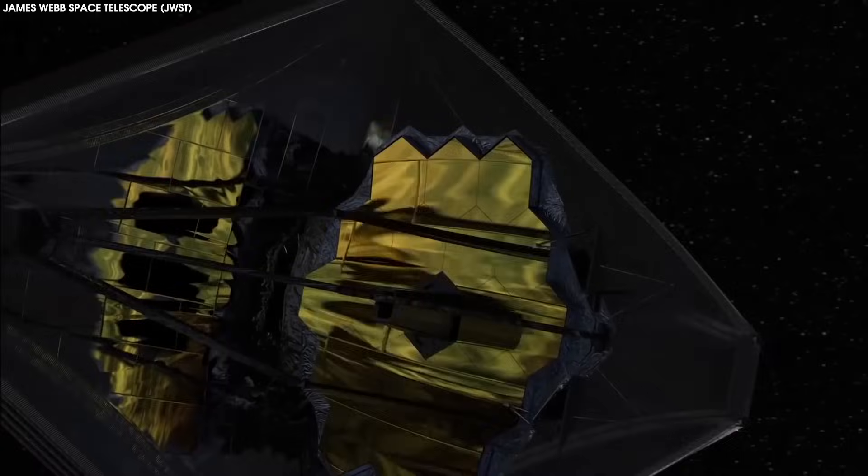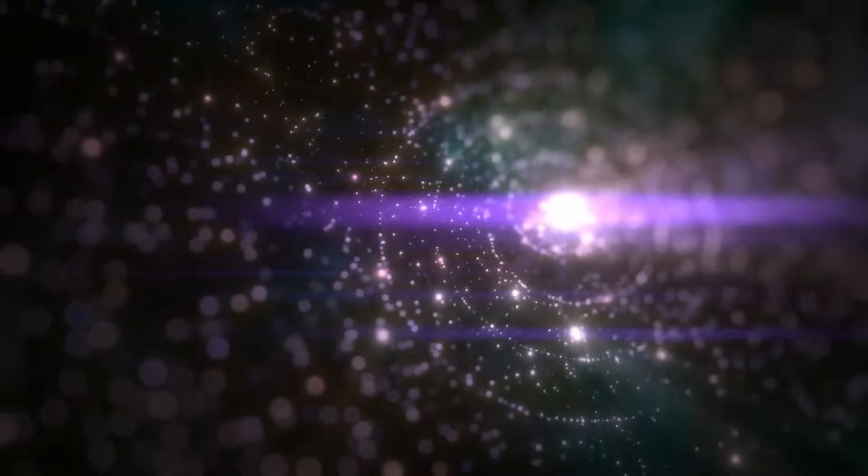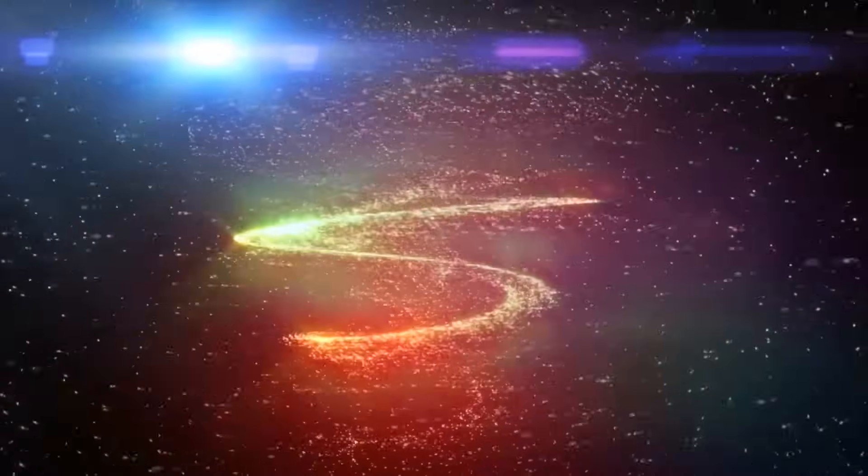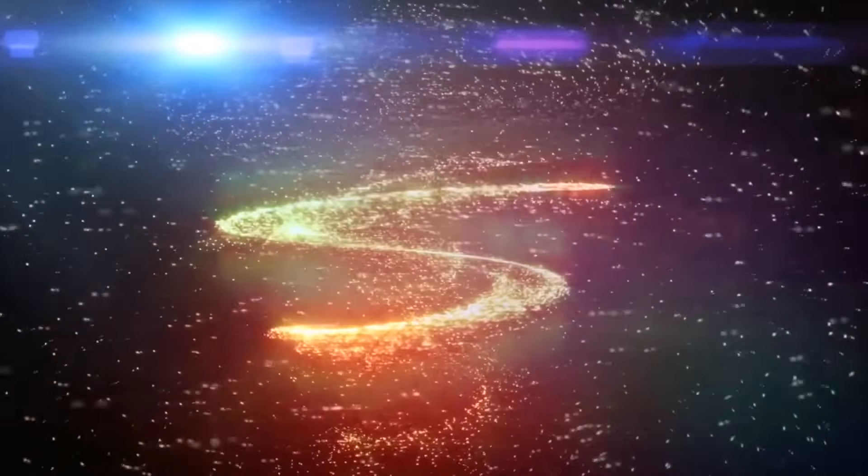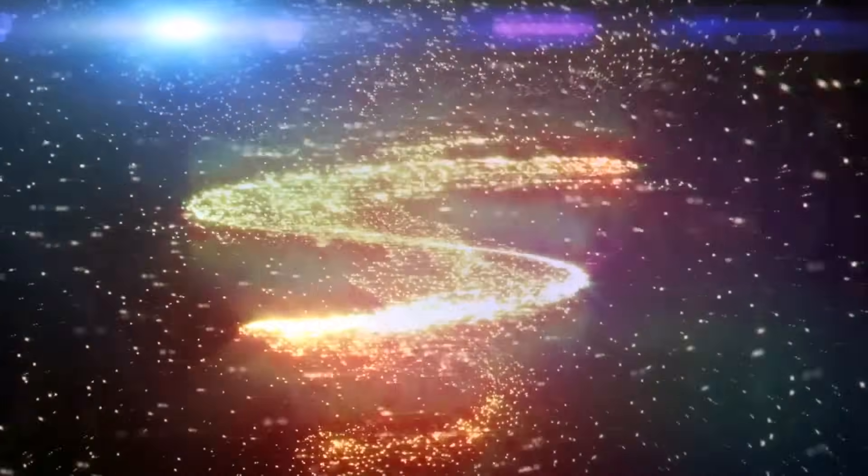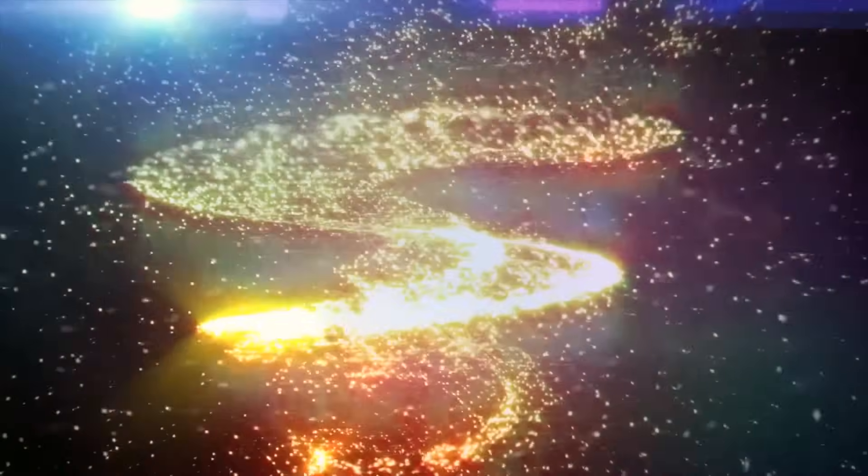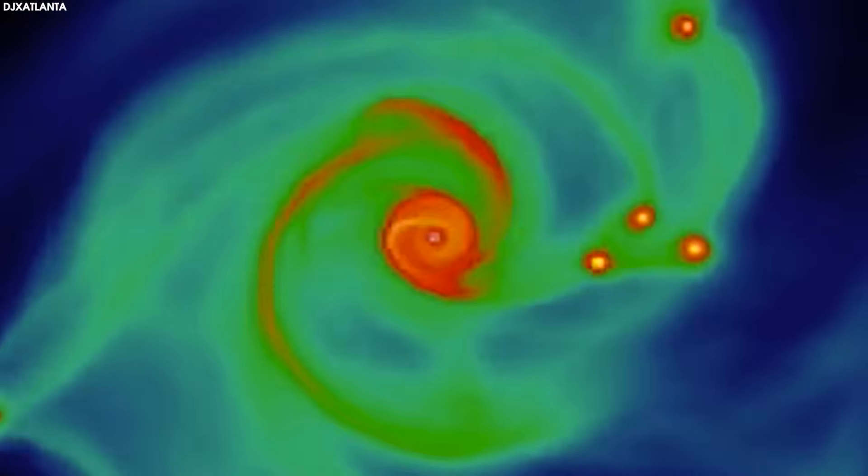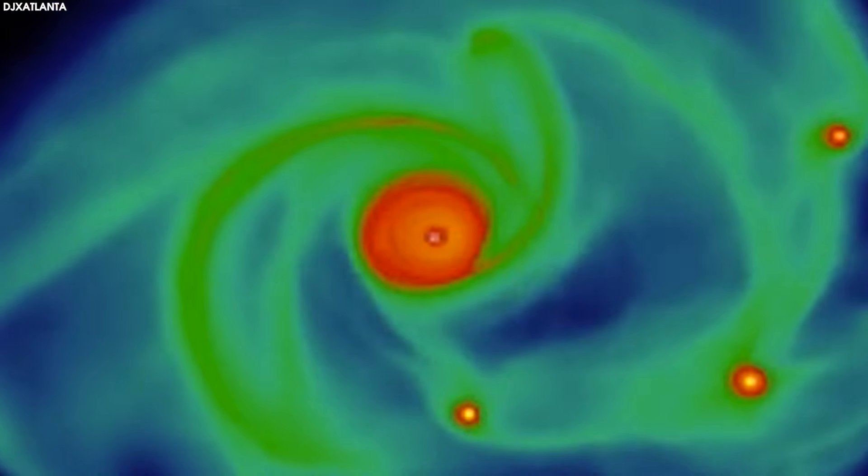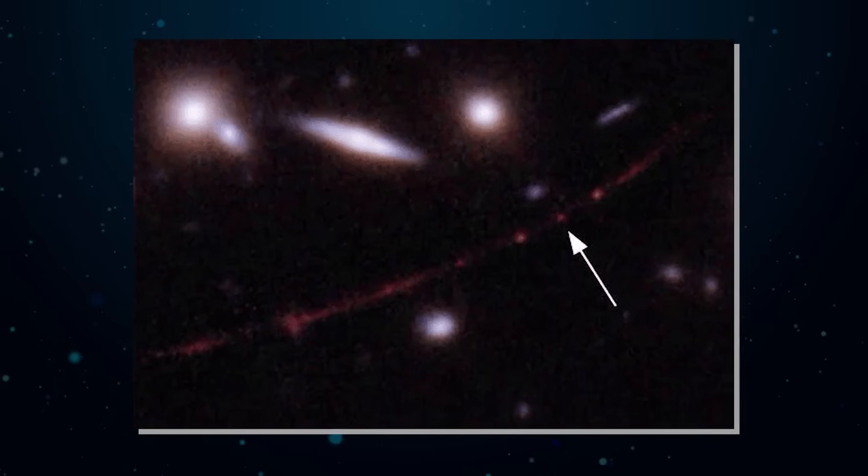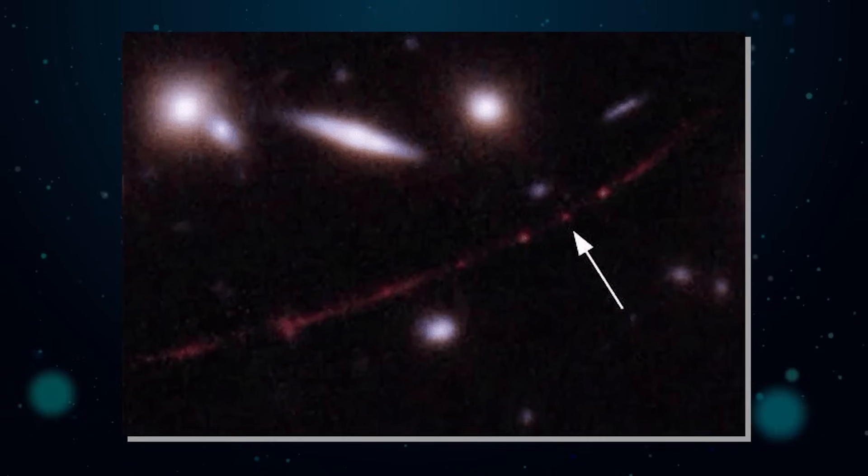The James Webb Space Telescope is revealing other new details in the Sunrise Arc galaxy, including nurseries of young stars and older clusters, some of which are only 10 light-years across. The region where new stars are forming is believed to be less than 5 million years old. It appears as a streak in both Hubble and James Webb space images.